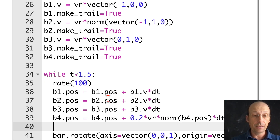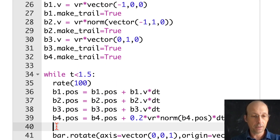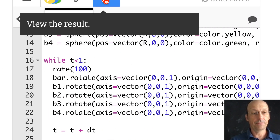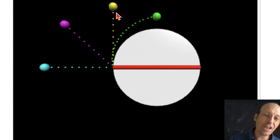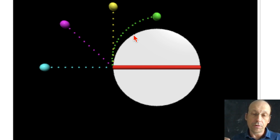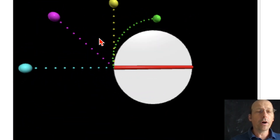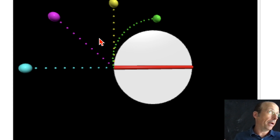I want to rotate b4 the same way as the bar. I think that should work. Yep, perfect. If you want to change the interval or size of the dots you can do that, and if you want to change this path so it moves more or less out, change the 0.2 in front of vr. Now I have all four paths and it's even in 3D — easier to model with Python than to draw it.